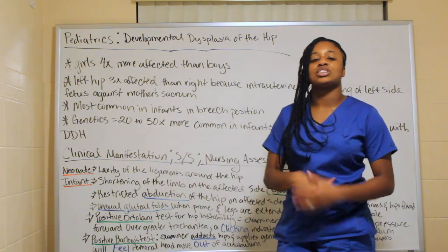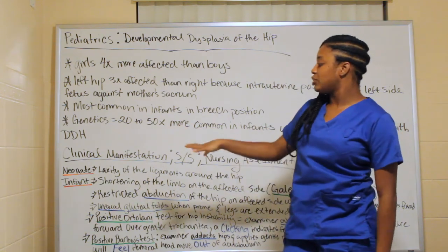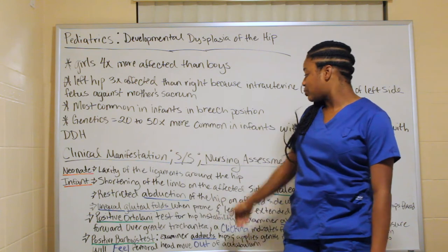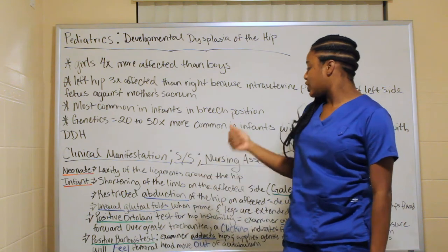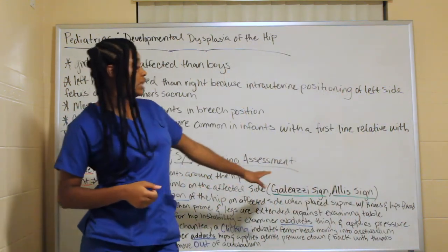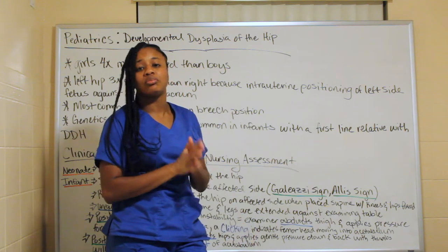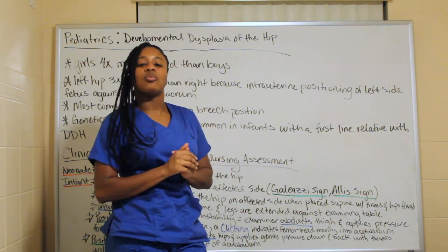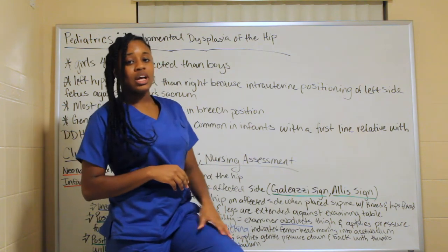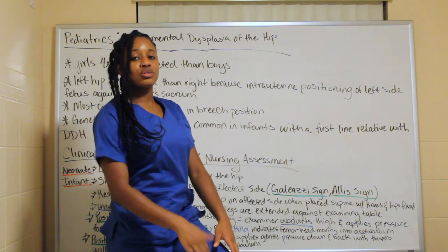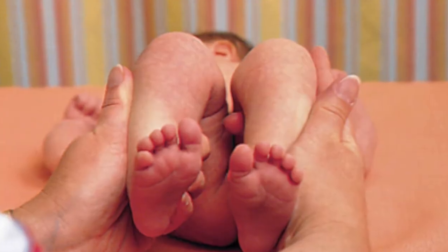Clinical manifestations include: within the neonate, laxity of the ligaments around the hip. In infants, shortening of the limb of the affected side. The Allis sign — also known as the Galeazzi sign — involves flexing the feet upward against the baby's gluteal areas, then comparing both feet to see if one appears shorter than the other.